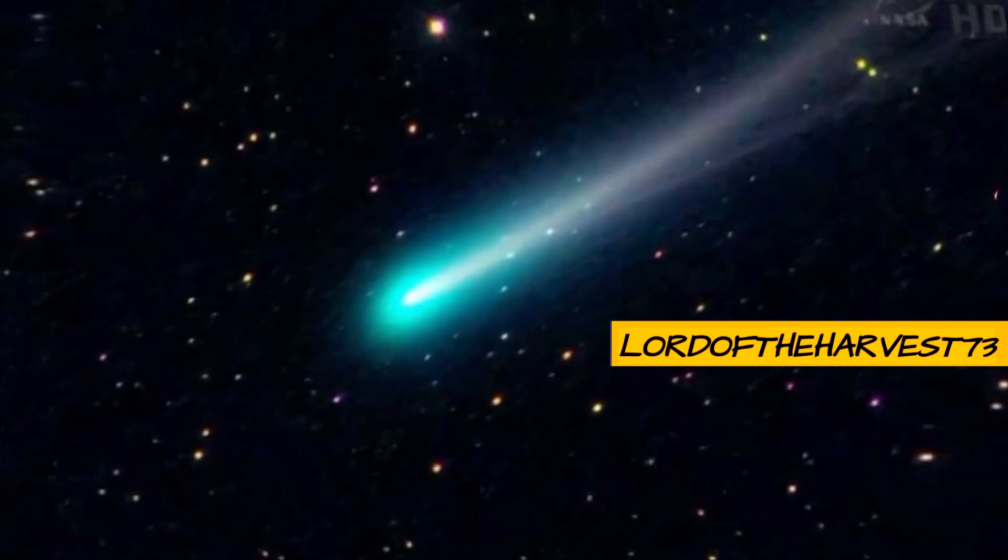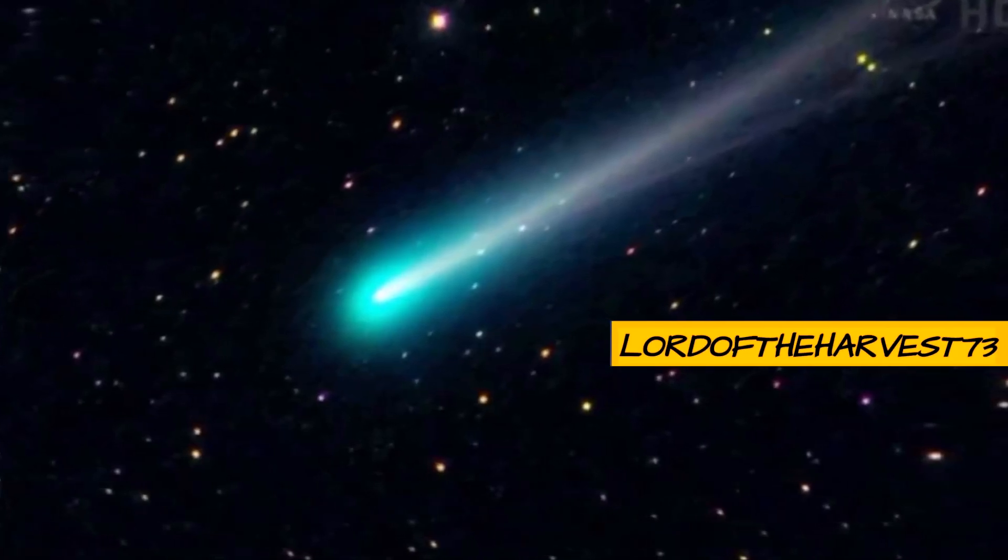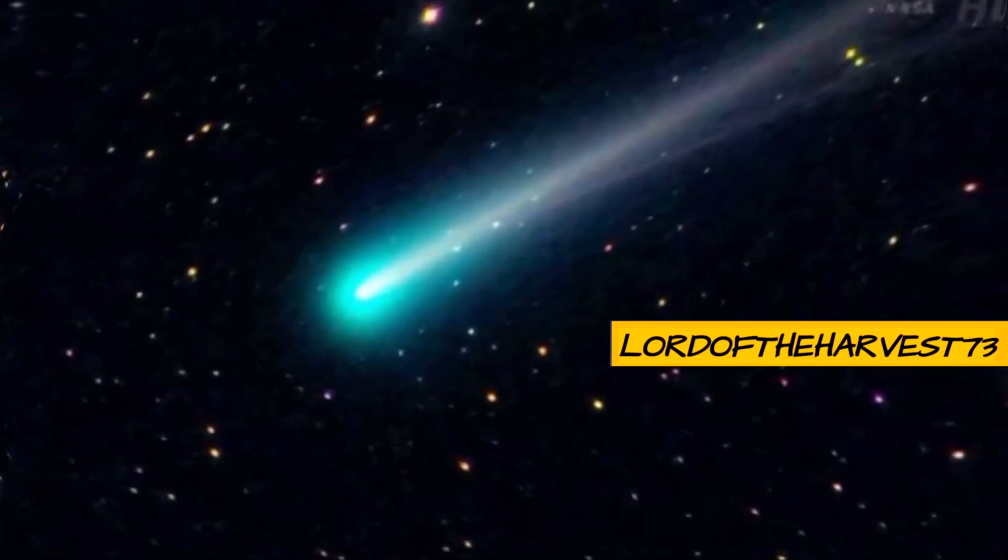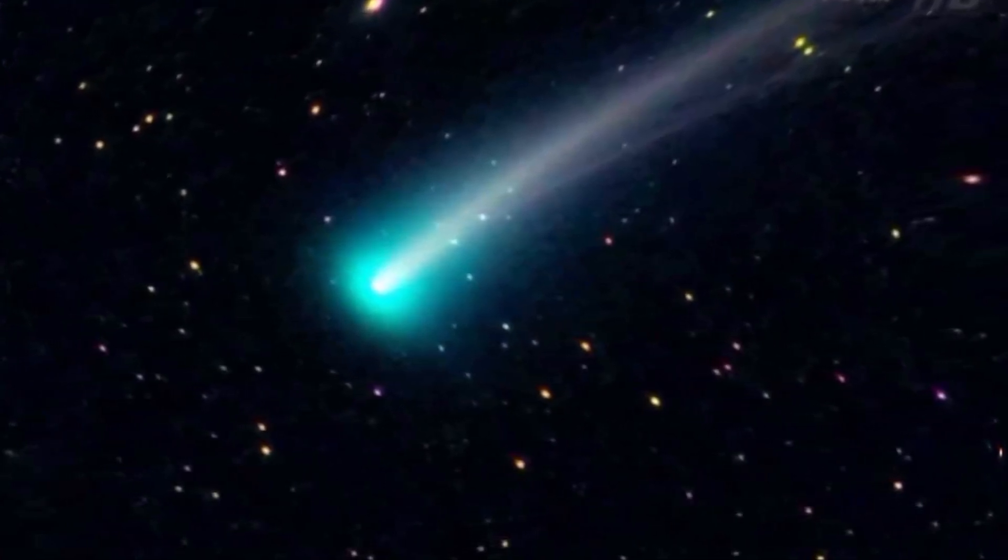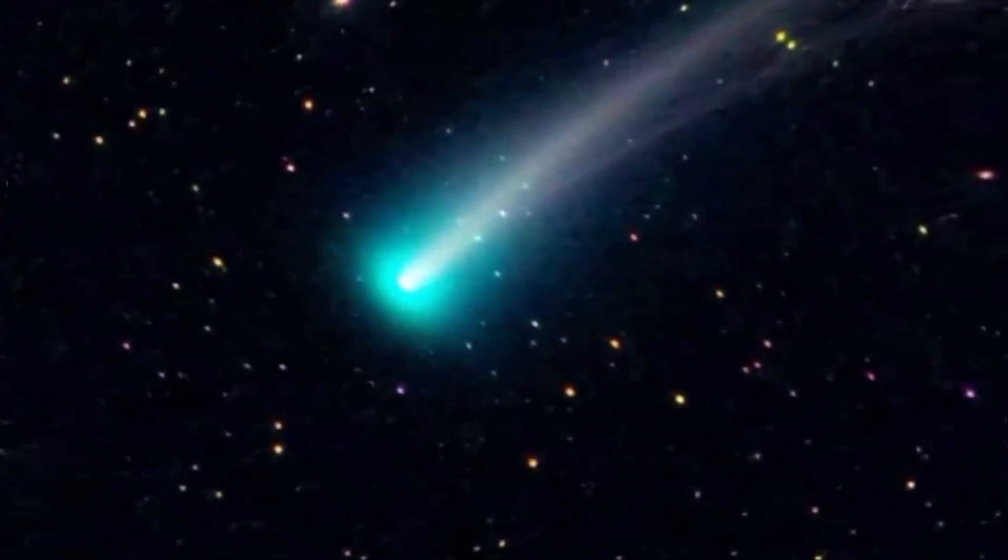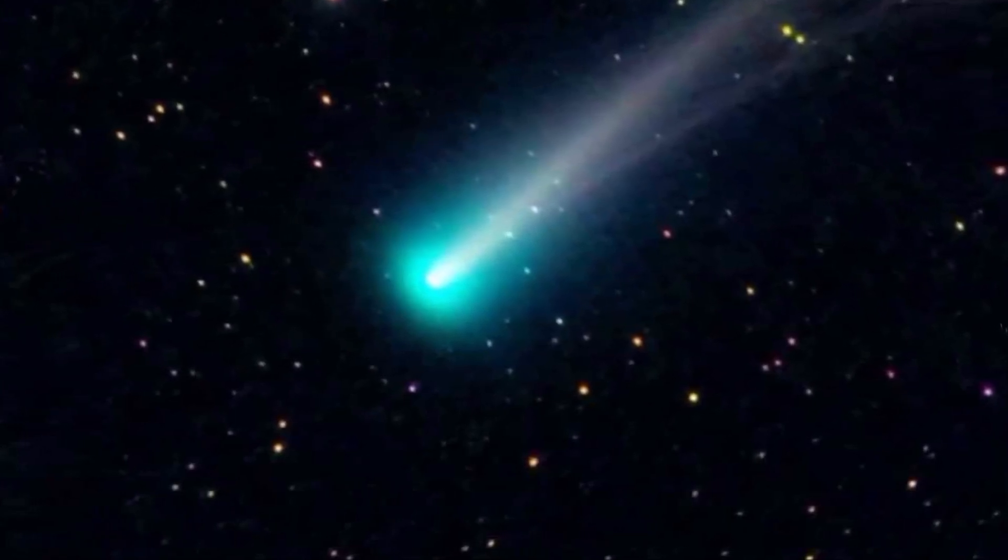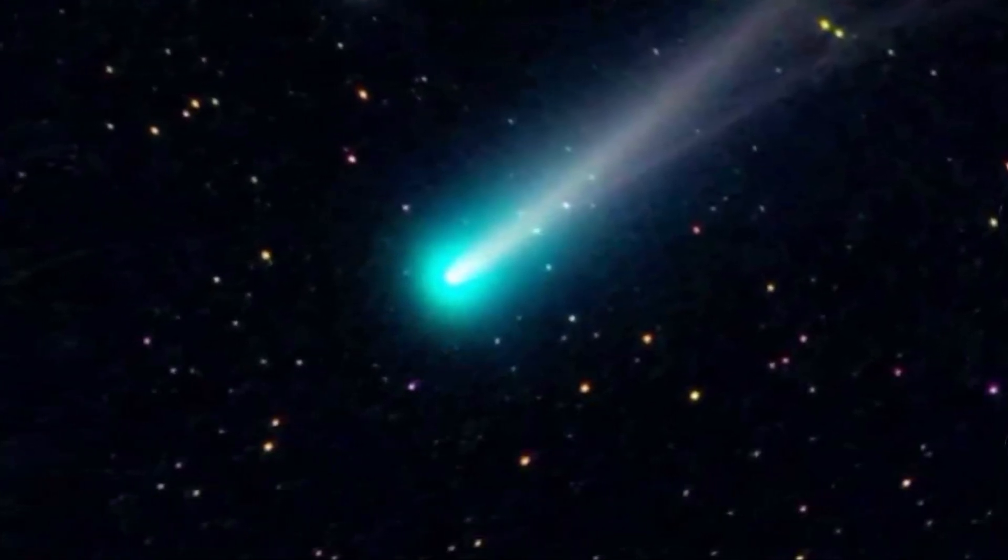There's another problem in that comets disintegrate too quickly. According to evolutionary theory, comets are supposed to be the same age as the solar system, about 5 billion years old. But every time a comet orbits close to the sun, it loses an enormous amount of material. The sun just rips all this stuff away.